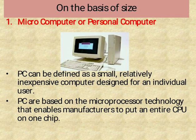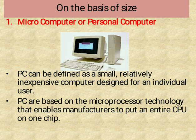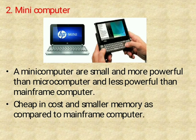On the basis of Size, the first one is Micro Computer or Personal Computer. The micro computer is defined as small and relatively inexpensive for individual use. The micro computer is based on microprocessor technology that enables manufacturers to put an entire CPU on one chip. Second, Mini Computer — 'mini' means small. The mini computer is very small, more powerful than micro computer and less powerful than mainframe computer, cheap in cost and smaller memory as compared to the mainframe computer.